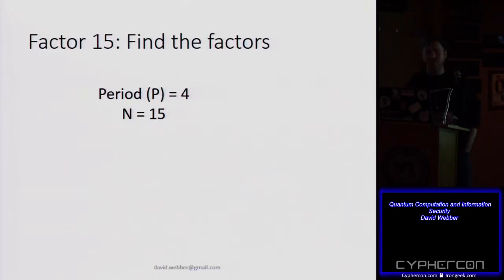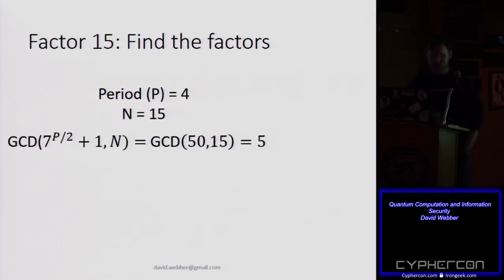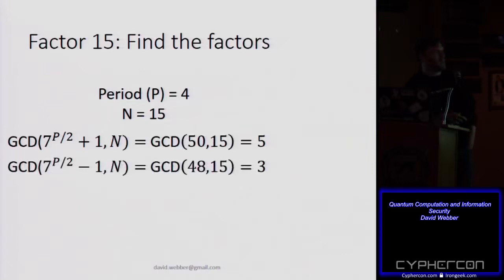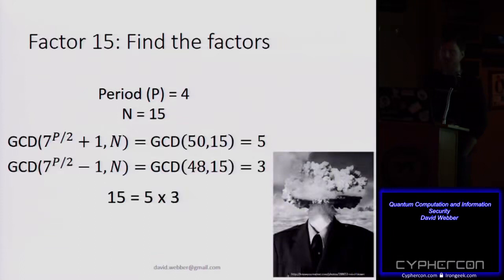Back to the classical computer: the period of our function is 4, and the number we're factoring is 15. Using the mathematical relationship: the greatest common denominator of (7^(4/2) + 1) and 15 — that's GCD(50, 15) = 5. Flip it around: GCD(48, 15) = 3. We have factored 15 into 3 and 5.